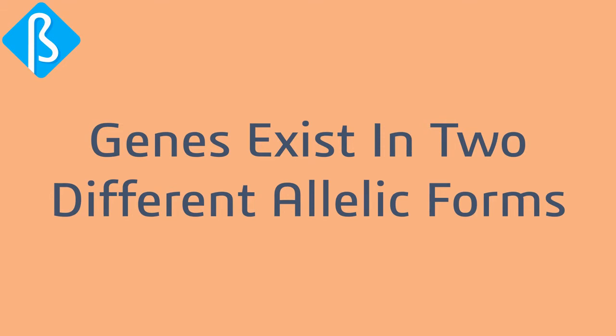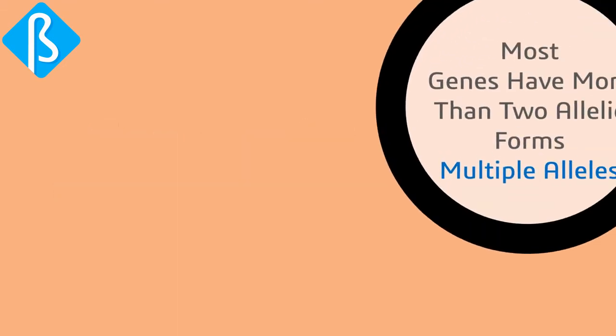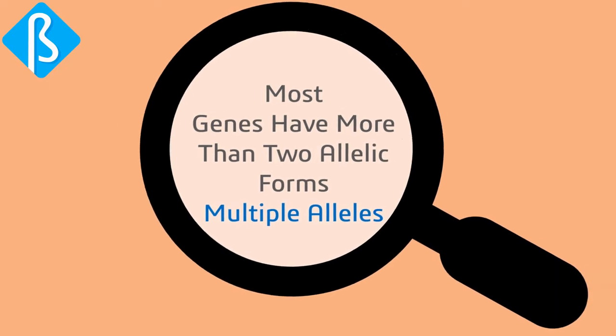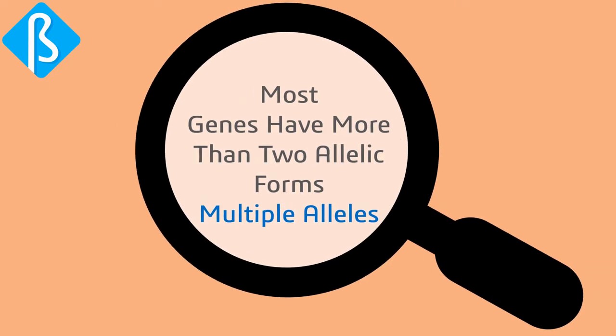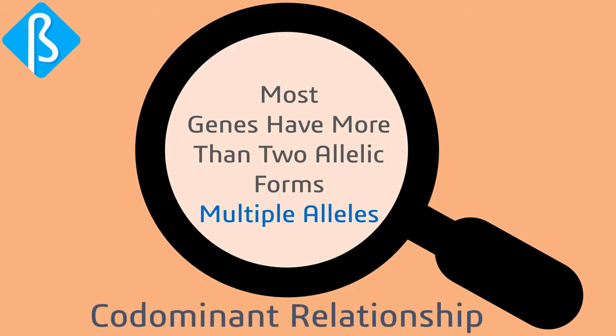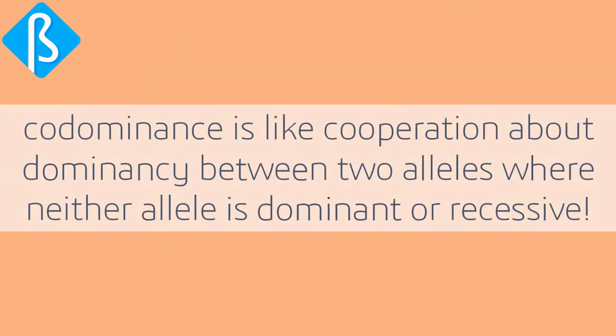So far we have considered genes existing in two different allelic forms, but researchers have proved that at the molecular level, in natural populations, most genes have more than two allelic forms, called multiple alleles. In those cases, apart from incomplete dominance, alleles sometimes show a co-dominance relationship.